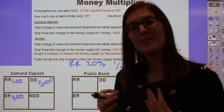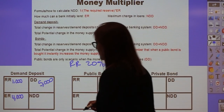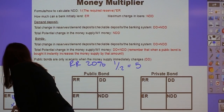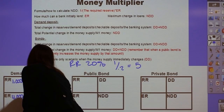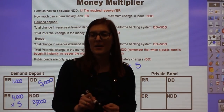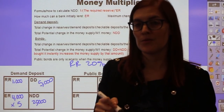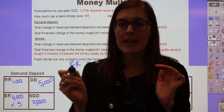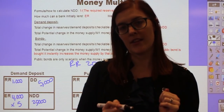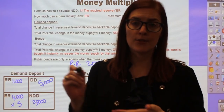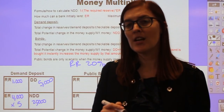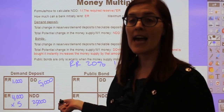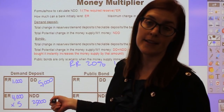What you're going to do is multiply this multiplier by the excess reserves — so times the $4,000 by 5. That gives you what's known as the new demand deposits, or NDD. New demand deposits are the same thing as loans — it's all the loans given from bank to bank added up together. So if it ever asks for the maximum change in loans, it would just be NDD because that is the total of all the loans added up.